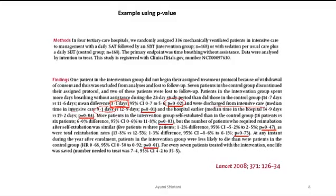How about this one? The number of patients who required re-intubation after self-extubation was similar — 5 versus 3 patients — and the p-value was 0.47. That means there was a 47% chance of seeing this difference or greater by chance alone. So it could happen by chance alone, and therefore they did not reject the null hypothesis in this case. That's how we use p-values.